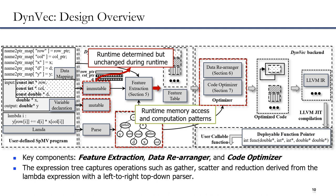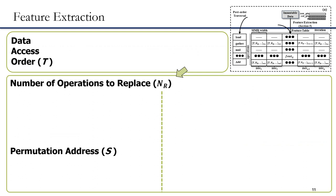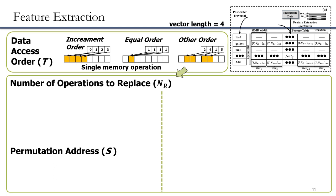After that, DEMV rearranges the data with the data rearranger for better data locality, and generates optimized SPMV codes with the code optimizer, which replaces gather, scatter, and reduction operations with more efficient operation groups. Finally, DEMV generates the user-callable function pointer via JIT compilation. DEMV extracts instruction features such as data access order, number of operations to replace, and permutation address from the immutable data during feature extraction. To represent the data access patterns, we classify the data access order within a vector length into several categories including increment order, equal order, and other order.